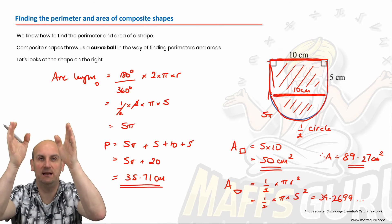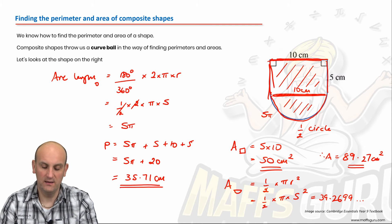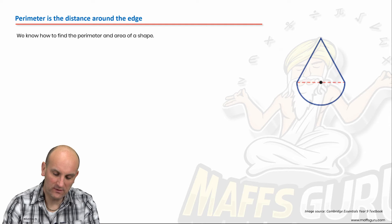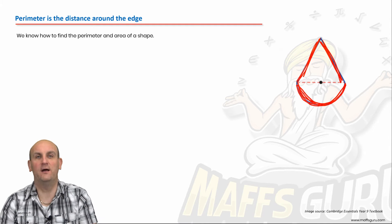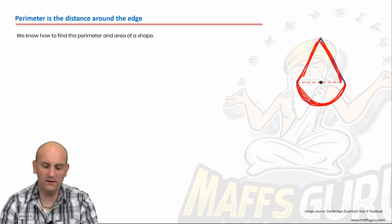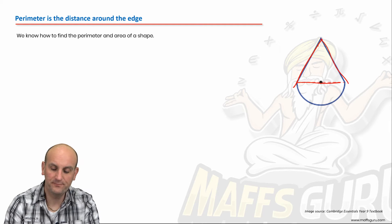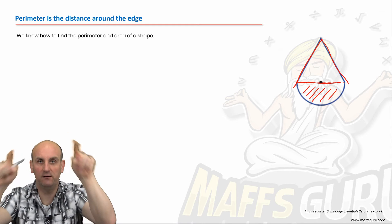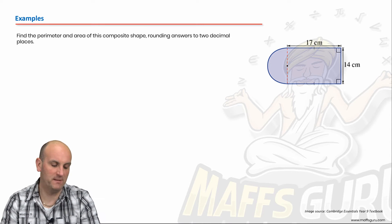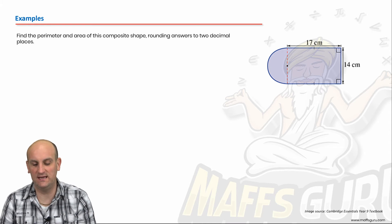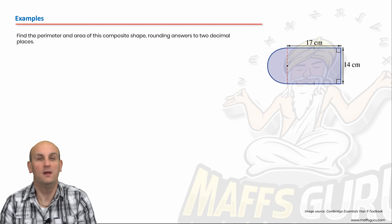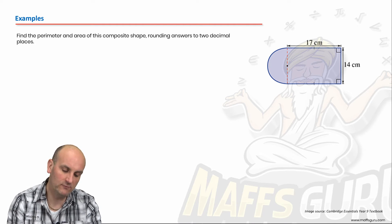Your working out should be down the page — I'm limited by space here but I'm showing all the working. For the perimeter of any such shape, you find the arc length of the semicircle plus the lengths of the straight sides. For the area you'd find the area of the triangle and also the area of the semicircle. Now, find the perimeter and area of this composite shape — it looks like a running track or maybe half a basketball court — rounding answers to two decimal places.